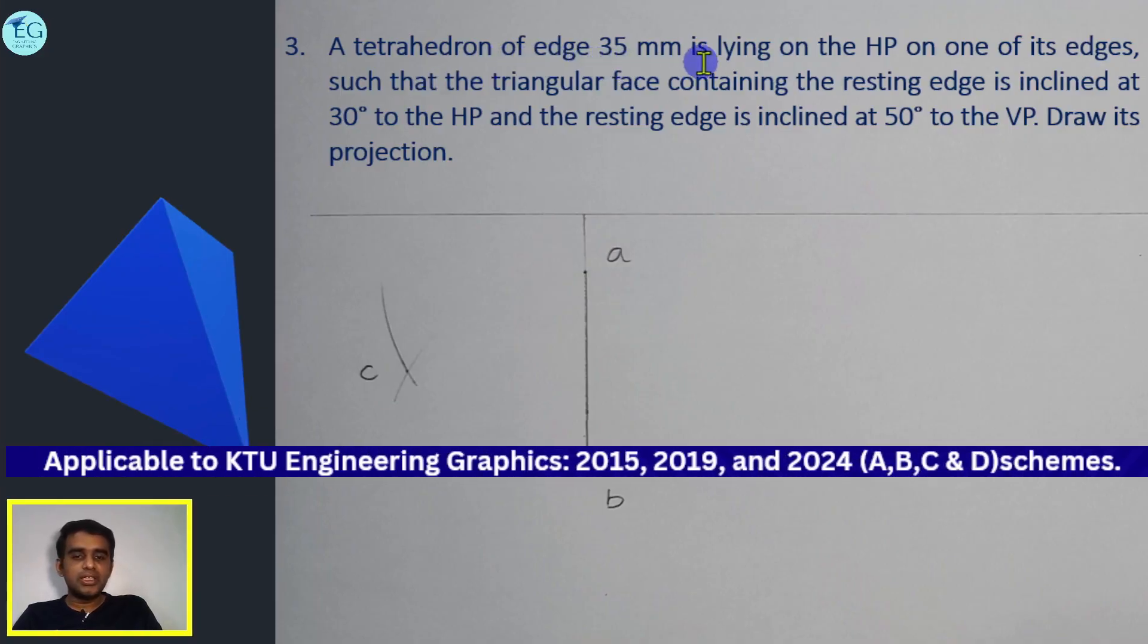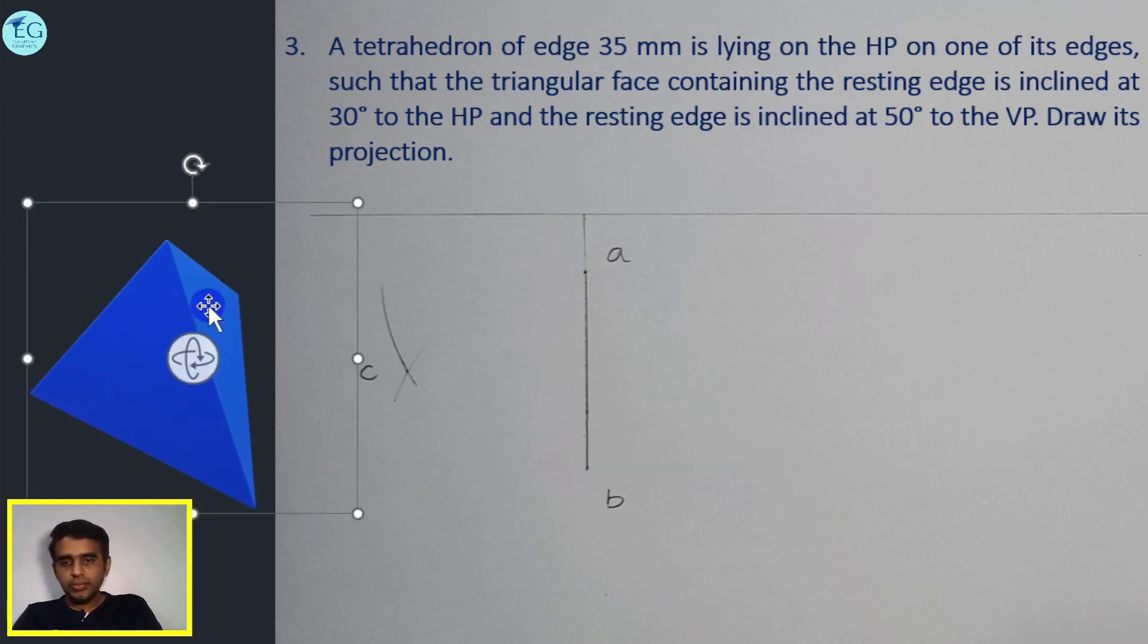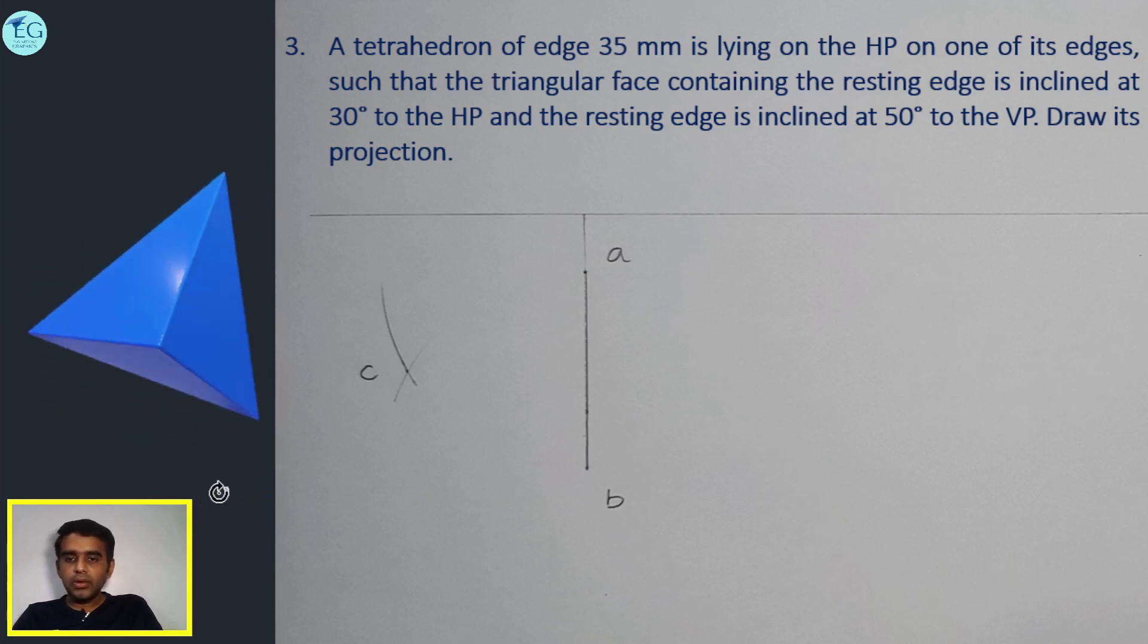A tetrahedron of edge 35 mm is lying on the HP on one of its edges, such that the triangular face containing the resting edge is inclined at 30 degrees to the HP and the resting edge is at 50 degrees to the VP. Draw its projection.